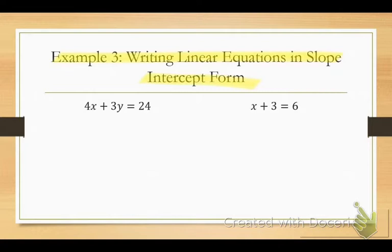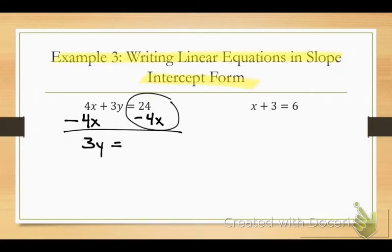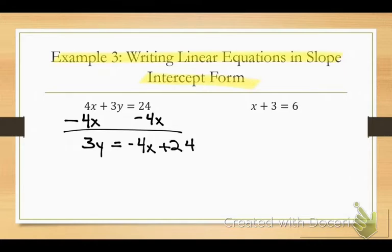What do I do first on the first equation? I need to subtract 4x from both sides. Now I have 3y equals — which term do I write first according to slope-intercept? Negative 4x. We have to pay attention to the sign: negative 4x plus 24. Now divide everything by 3. And y equals negative 4/3 x plus 8.